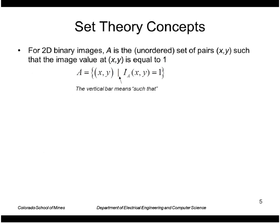Let's look at some set theory concepts. We're going to treat our 2D binary images as a set of points. We have x,y points that make up the set, and we're going to look at only those points where the image value equals 1. The notation we use is this set notation which says A is the set of these elements, vertical bar means such that, and then I(x,y) equals 1.